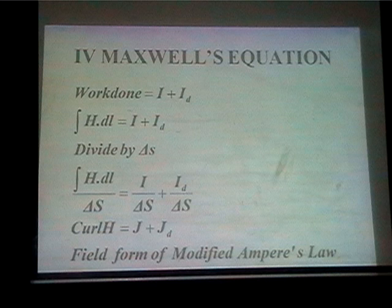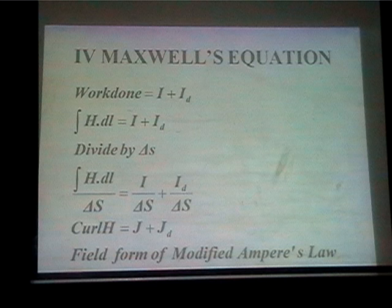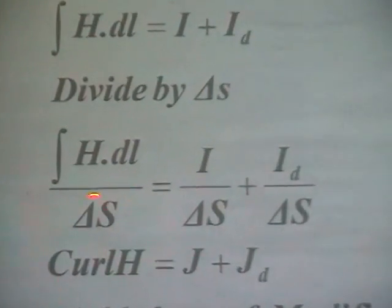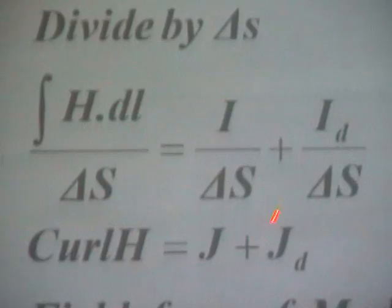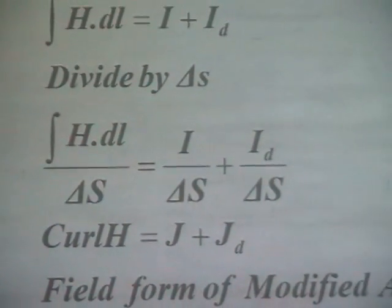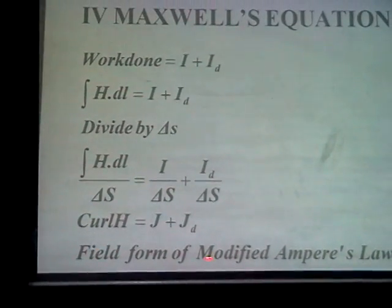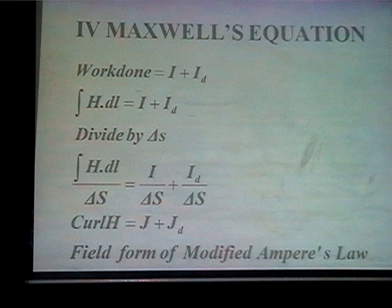Maxwell answered why the sending-end current is much larger than the receiving-end current: the line capacitance draws additional current. So he modified Ampere's law. Basic Ampere's law says work done equals conduction current. But Maxwell said you also have to consider displacement current. So curl H equals J plus Jd — where J is conduction current density and Jd is displacement current density. This is called the field form of modified Ampere's law. Do not forget Jd — in AC circuits charging current is present.